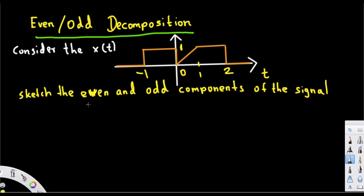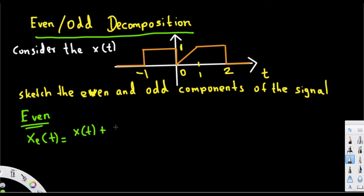There are two generic equations we need to know in order to do this. For even, we have the equation x_e(t), which is given by x(t) plus x(-t), divided by 2. This is for the even component.